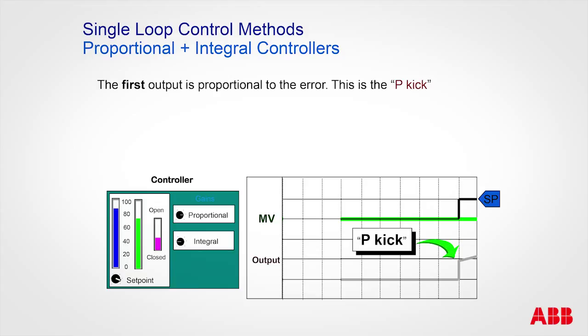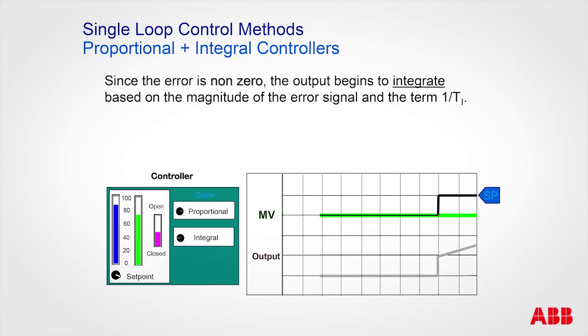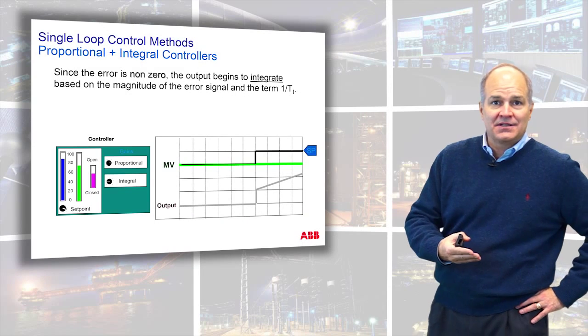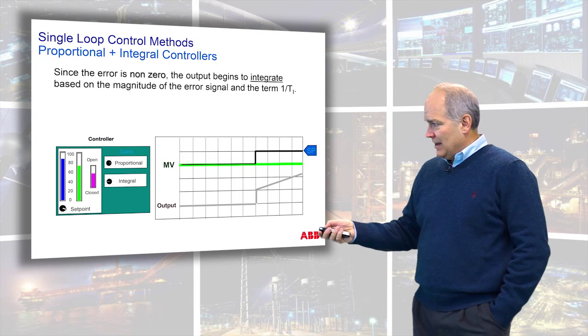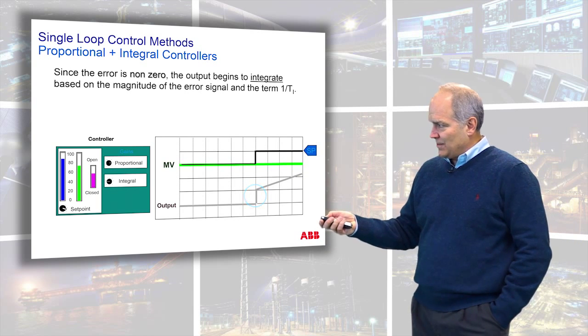Then because the error hasn't changed, proportional says it's done. But integral says it's got to do something, so the output continues to grow. If I know how much the output moved in relation to the step, I can identify the type of proportional gain - whether it's in percent, customer units, or proportional band.